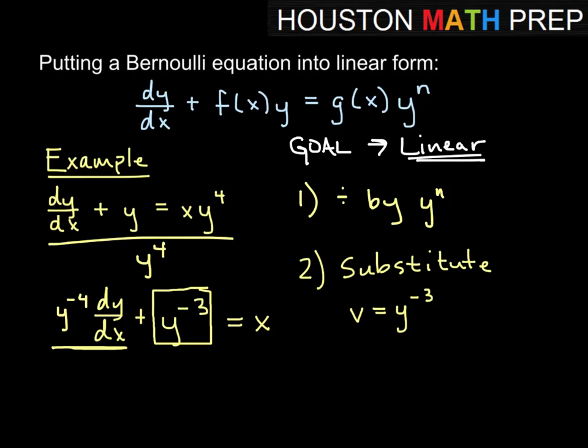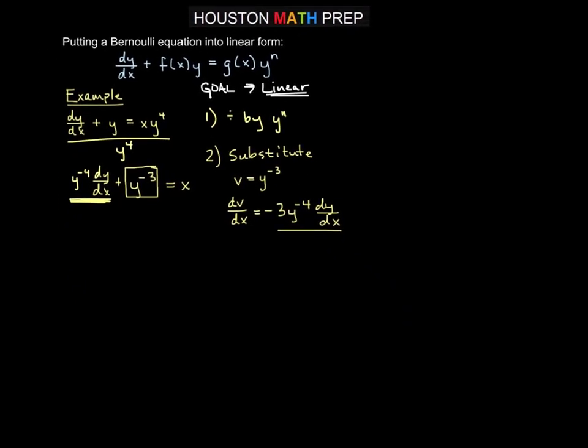So when I do my substitution of y equals v to the minus 3, then when we find the derivative, in other words, dv/dx equals negative 3, and then the power goes down by 1, y to the minus 4 dy/dx. So now what we have here is just simply a multiple of what we needed also to get rid of the remaining y's. So now if I want directly a substitution for this y to the minus 4 dy/dx, I simply need to take this expression here and divide both sides by negative 3. So we would get negative 1/3 dv/dx is equal to our y to the minus 4 dy/dx.